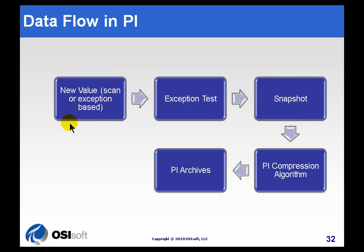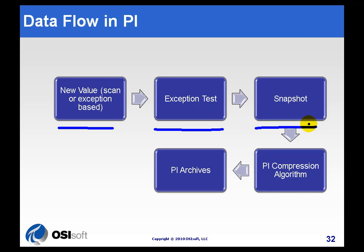The data in PI comes in along this kind of path right here. New values are brought in typically by interfaces, and on the interface we typically do something we call an exception test. That exception test results in data that goes into what we call the snapshot — the structure that feeds ProcessBook in real time. From there, the compression test is applied next, and the results of that compression test are stored in the PI archives.